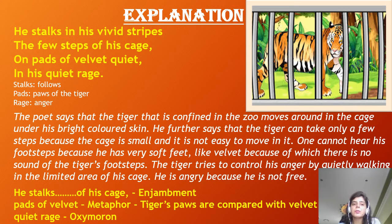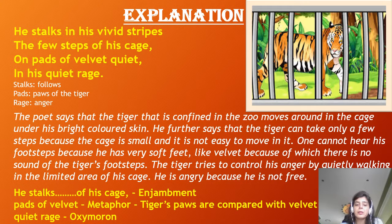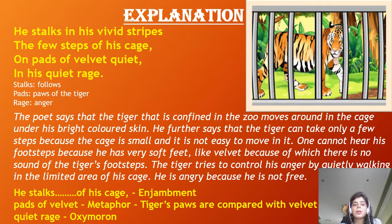Now coming to the poetic devices in the first stanza: 'He stalks in his vivid stripes, the few steps of his cage' — the first line continues in the second line with no punctuation mark denoting the line is ending, so the poetic device used is enjambment. The next poetic device is 'pads of velvet', which is a metaphor — the tiger's paws are compared with velvet, and since there is no usage of 'as' or 'like', it is a metaphor. Finally, 'quiet rage' — 'quiet' means sitting still, not making noise, and 'rage' means angry and ferocious. Both these are opposites, so the poetic device used is oxymoron.